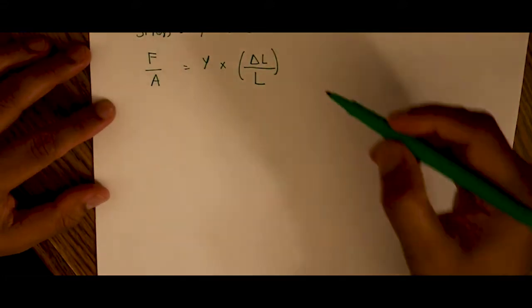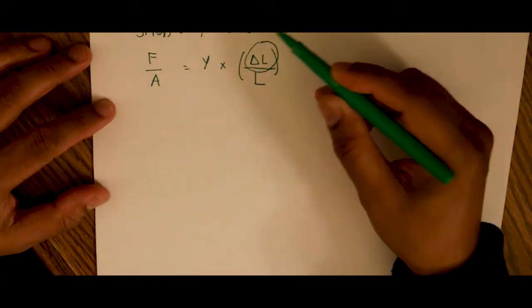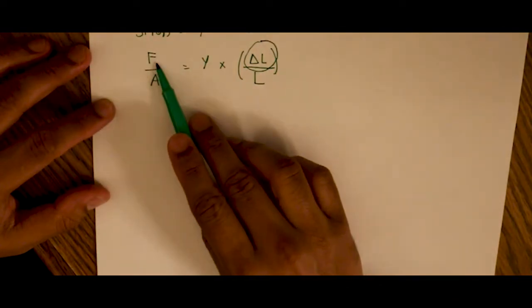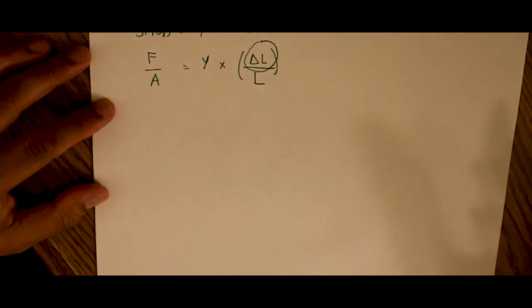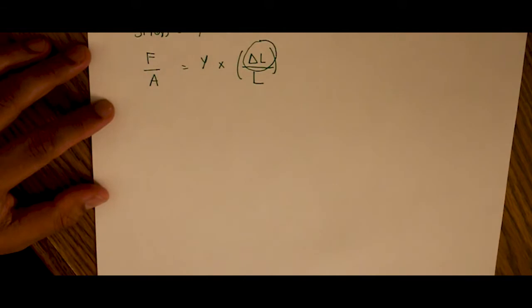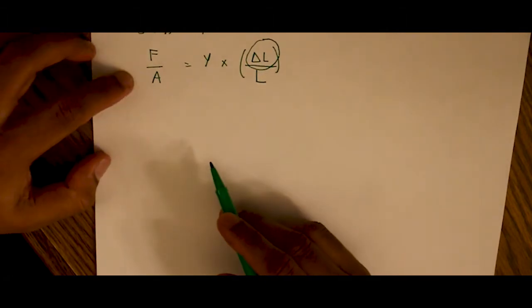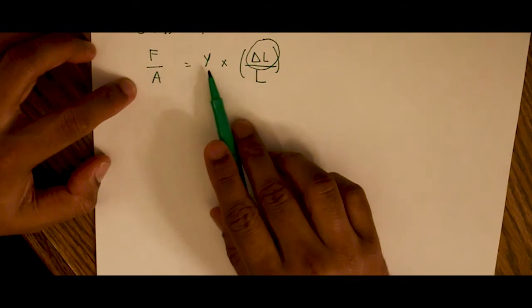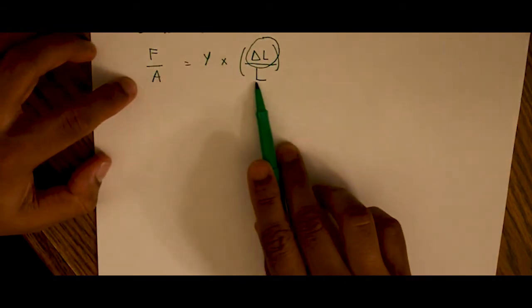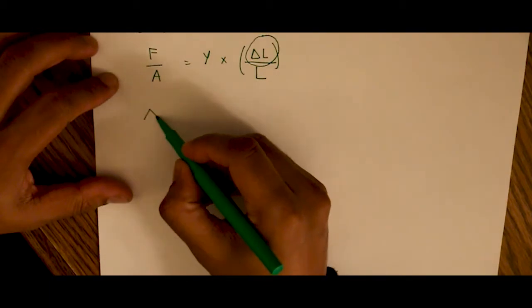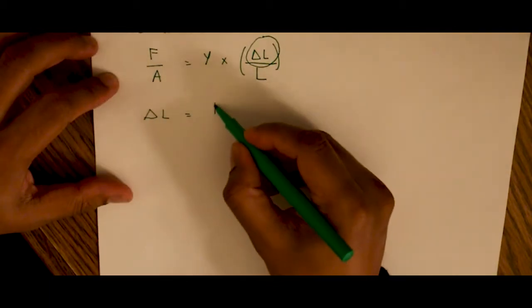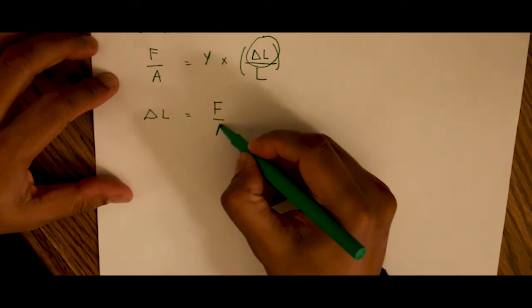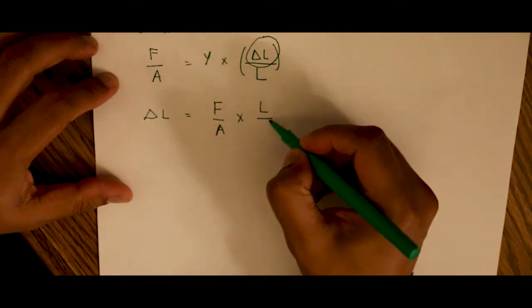We are asked to find the delta L. We know the force. The force in the problem was given to us as eight times his weight, so that's eight times 70 kilograms times 9.8 meters per second squared to give us Newtons. And we know the cross-sectional area of the tendon, we know the Young's modulus, and we know the length of the tendon. So let's just rearrange this formula to give us delta L. So delta L equals force over area times length over Young's modulus.